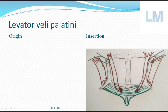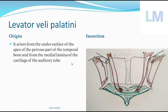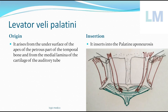The origin of levator veli palatini: it arises from the undersurface of the apex of the petrous part of the temporal bone and from the medial lamina of the cartilage of the auditory tube (eustachian tube). It descends vertically downwards, medial to the medial pterygoid plate, and gets attached to the upper surface of the palatine aponeurosis.